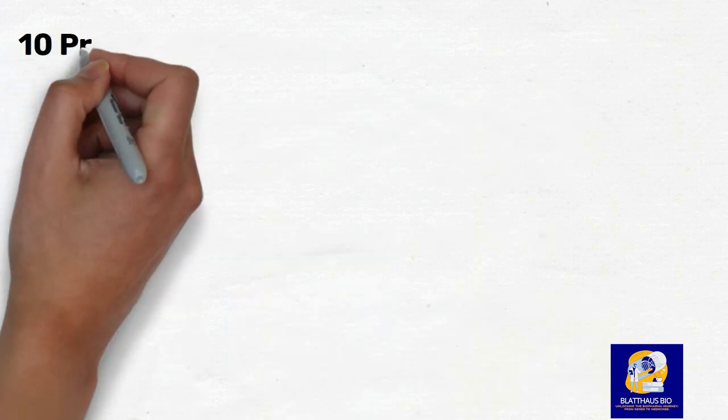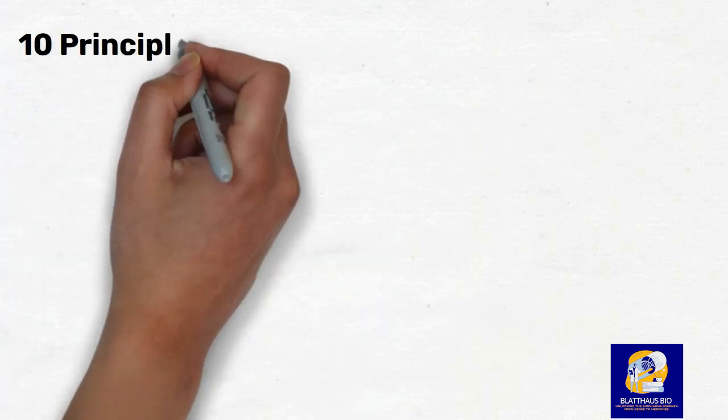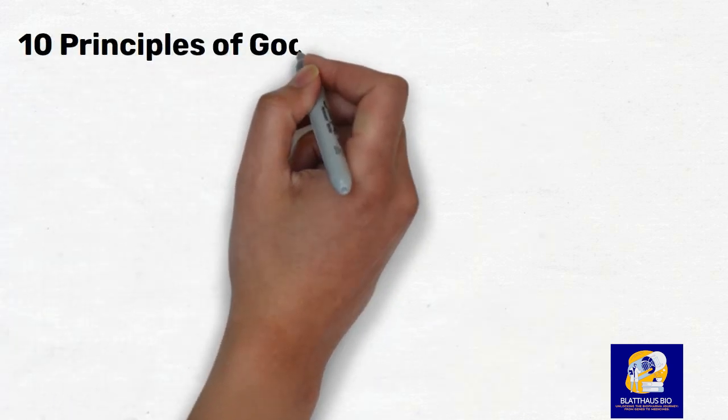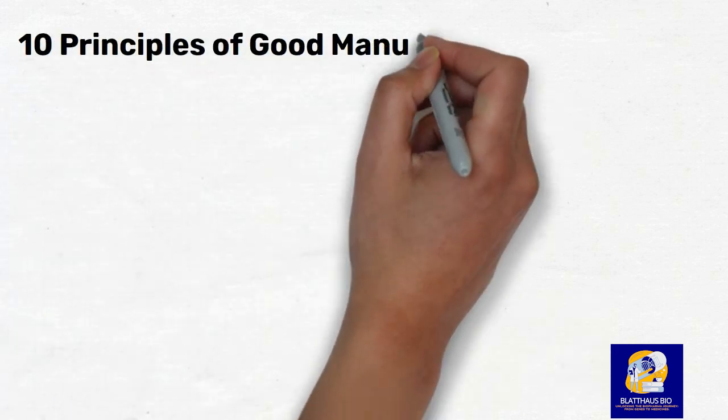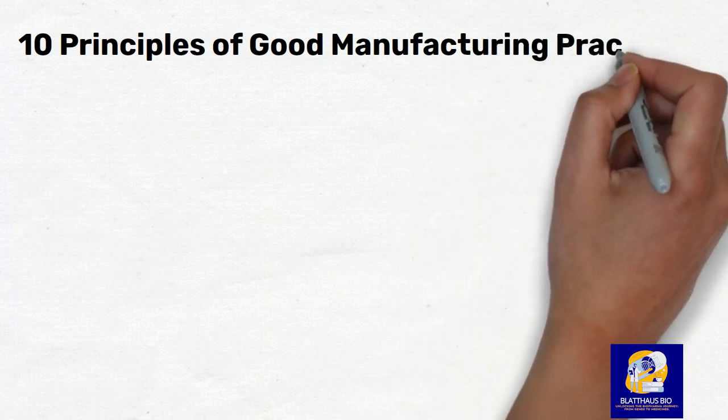And that's it. We've covered the 10 principles of Good Manufacturing Practices and provided some examples of how they are implemented in manufacturing facilities. To summarize, the 10 principles of Good Manufacturing Practices are: Quality Management System, Personnel, Facilities and Equipment, Materials, Production, Quality Control, Documentation and Records, Sanitation and Hygiene, Complaints and Recalls, and Supplier Management.